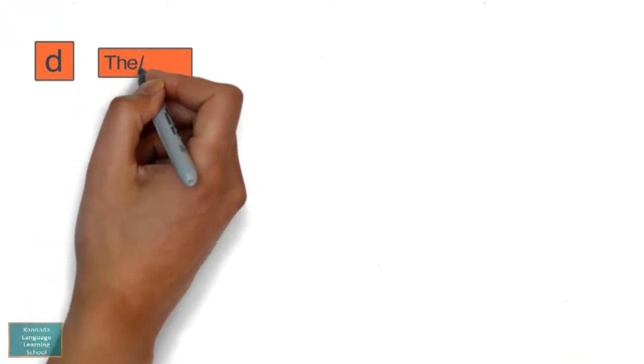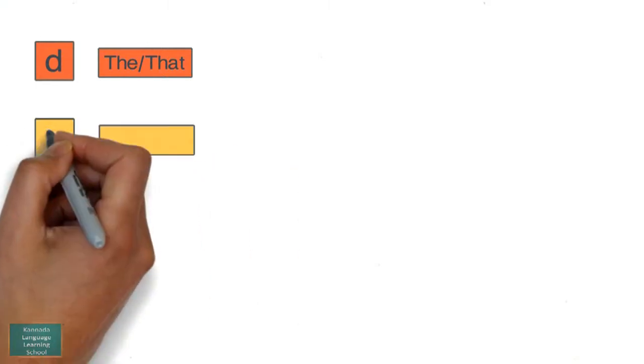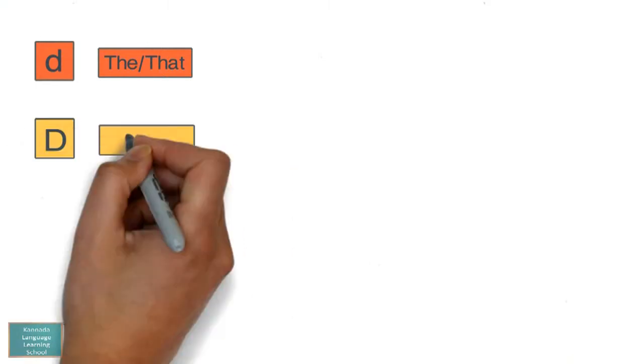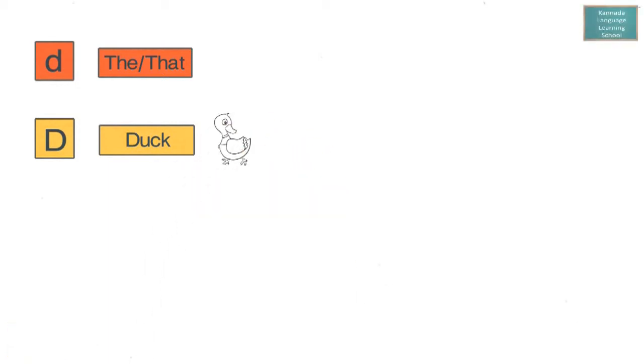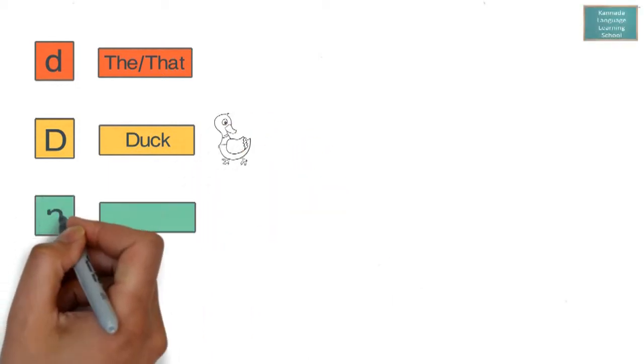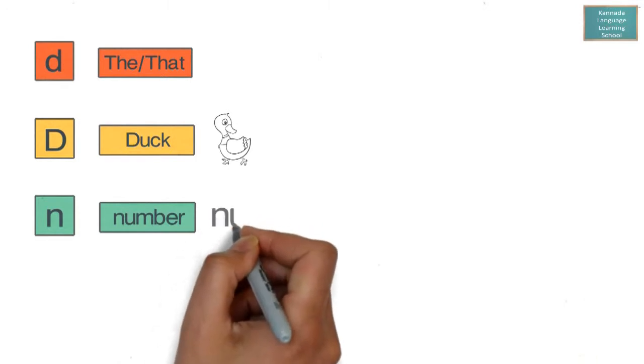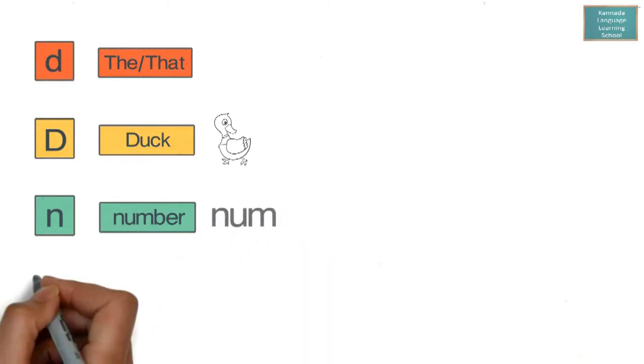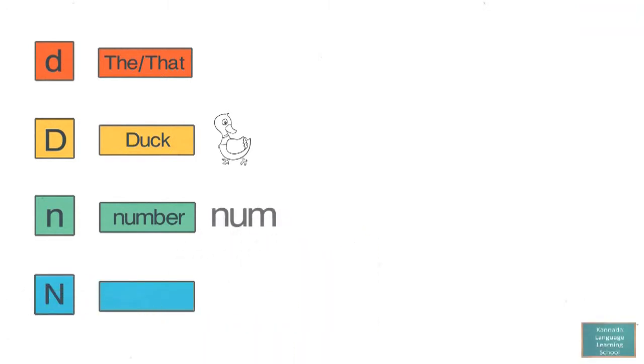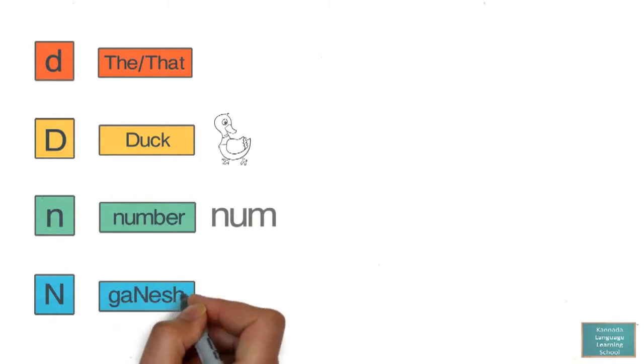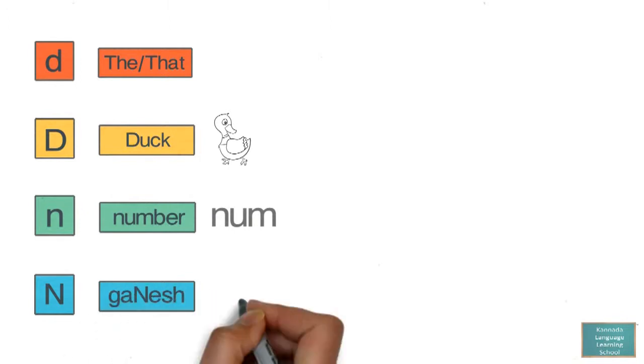Small 'd' is pronounced as 'the' as in 'the' or 'that'. Capital 'D' is pronounced as 'the' as in 'duck'. Small 'n' is pronounced as 'no' as in 'number'. Capital 'N' is pronounced as 'no' as in 'Ganesh'.